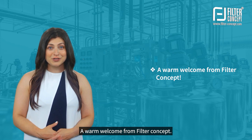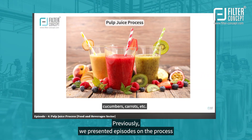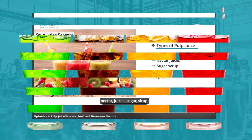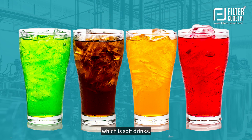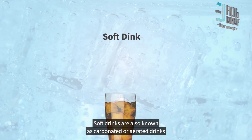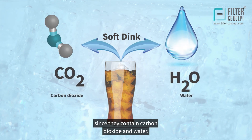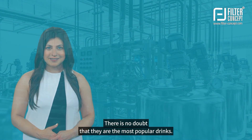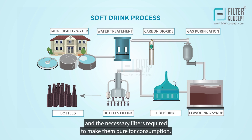A warm welcome from Filter Concept. Previously we presented episodes on the process of alcoholic beverages and healthy drinks like pulp juice. Moving further, we would like to present one of the most popular beverages, which is soft drinks. Soft drinks are also known as carbonated or aerated drinks since they contain carbon dioxide and water. Let's learn about the process of making soft drinks and the necessary filters required to make them pure for consumption.